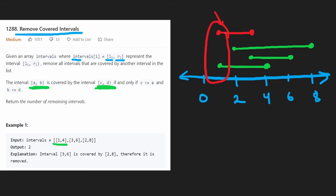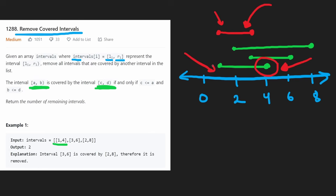If there's a tie between left points, we should put the one with a larger right point first, because if it has a larger right point, it must mean it's not being covered by any other intervals. If there's a tie, the other's right value will be smaller, so we know this one won't be covered. So that's the idea.